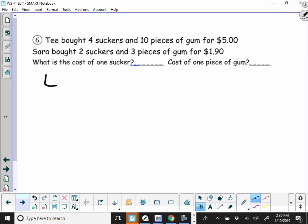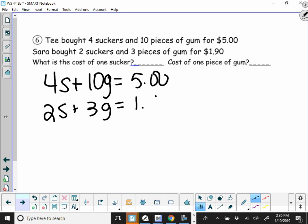All right, number 6. T bought 4 suckers and 10 pieces of gum, and his total was $5. Sarah bought 2 suckers and 3 pieces of gum, and her total was $1.90.